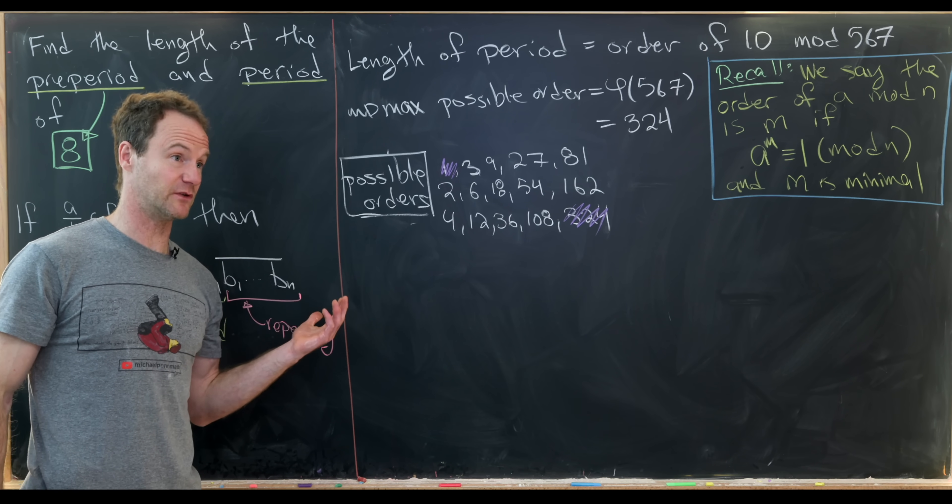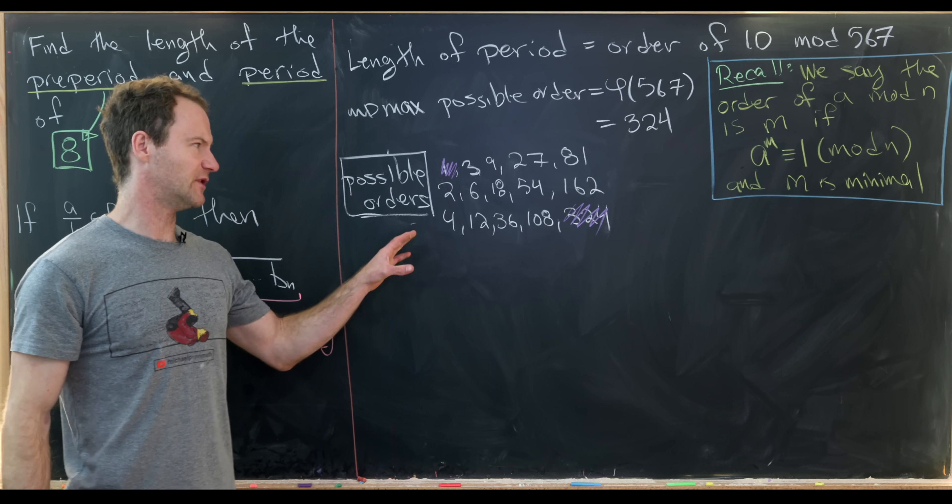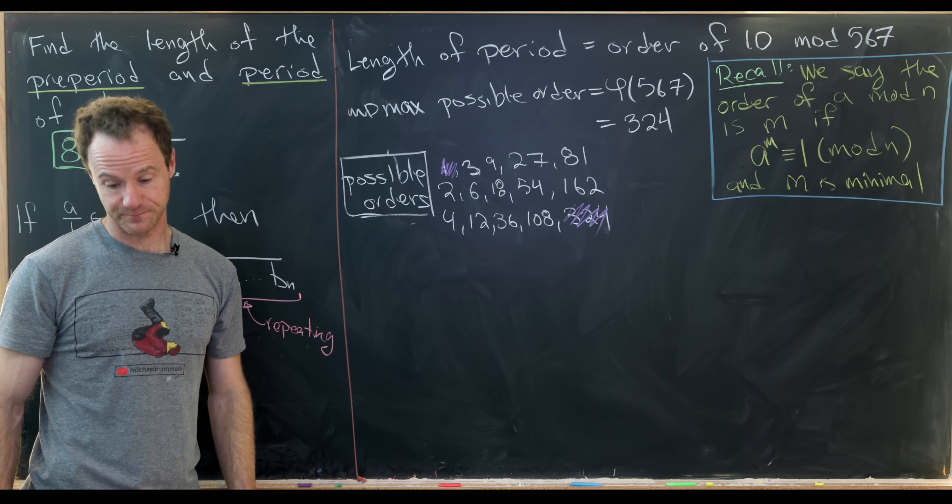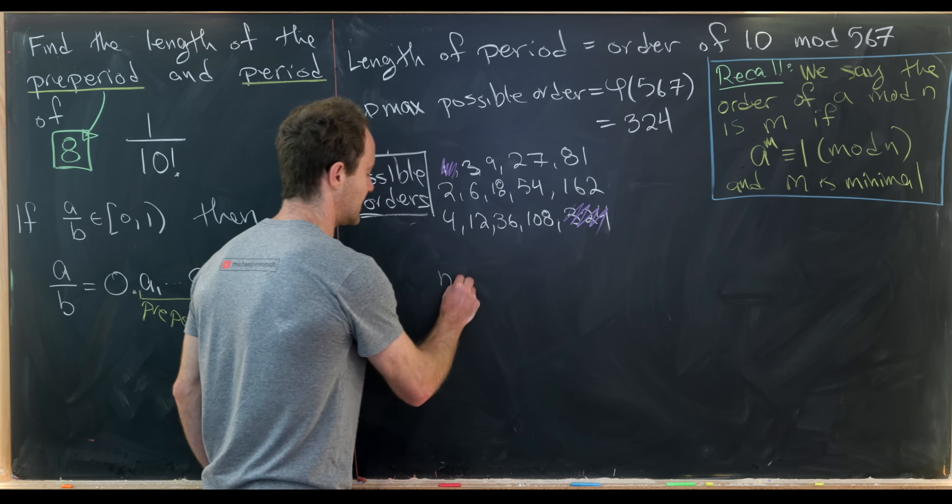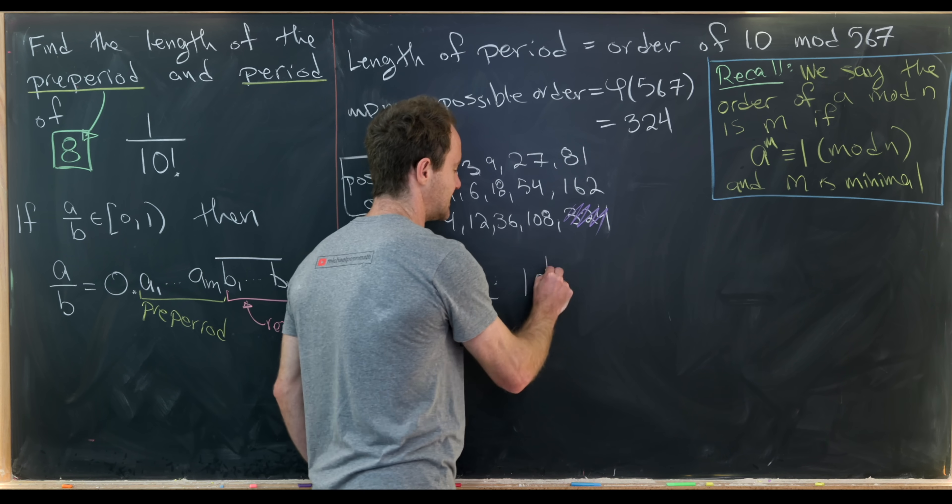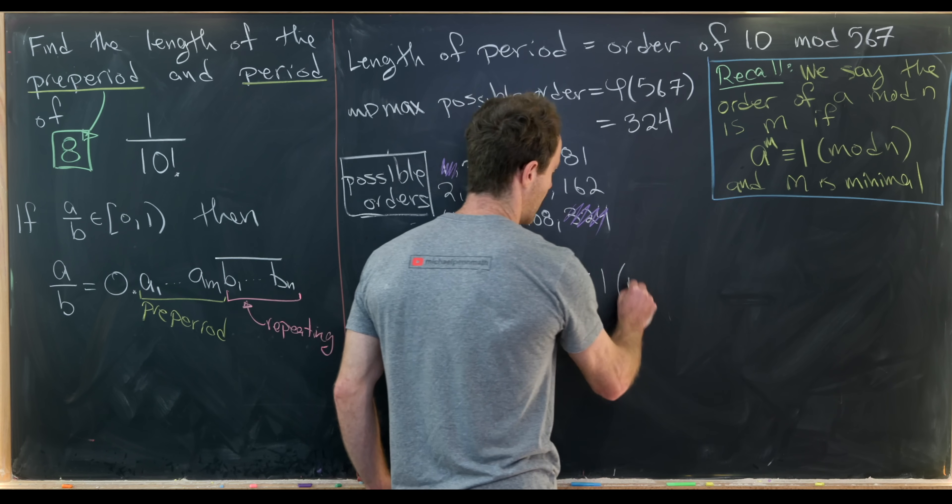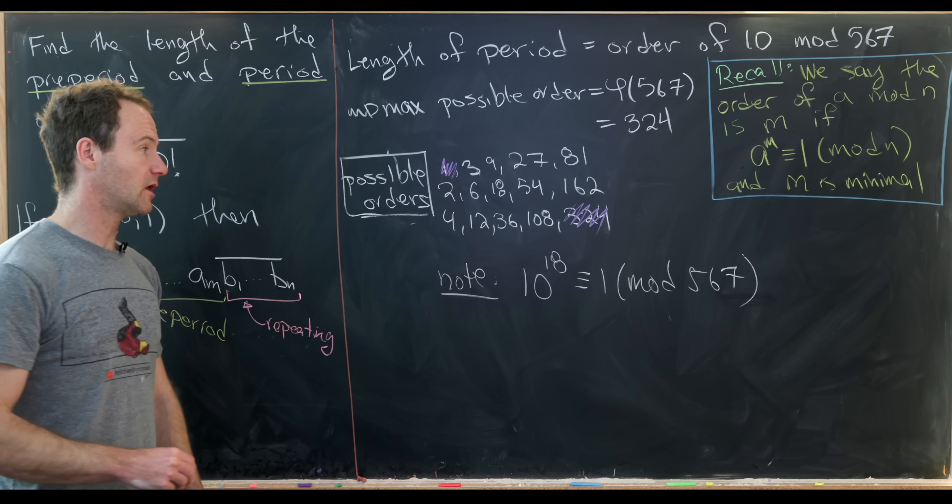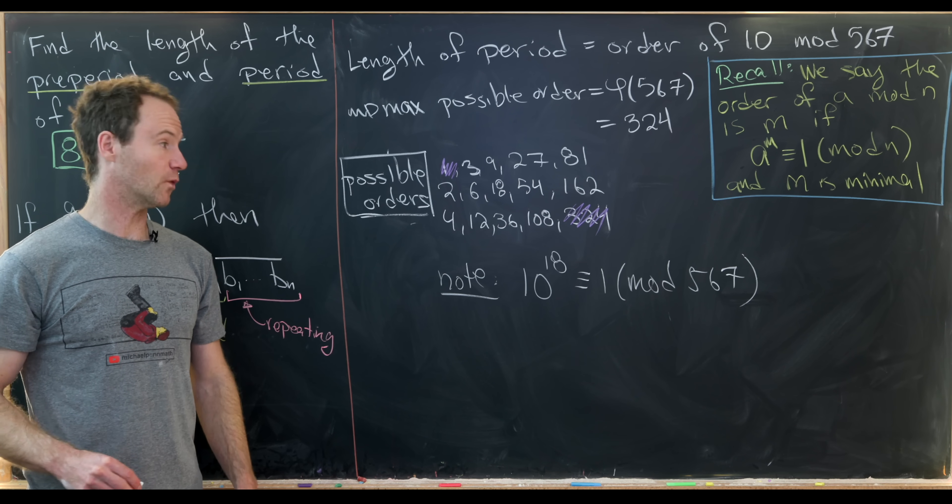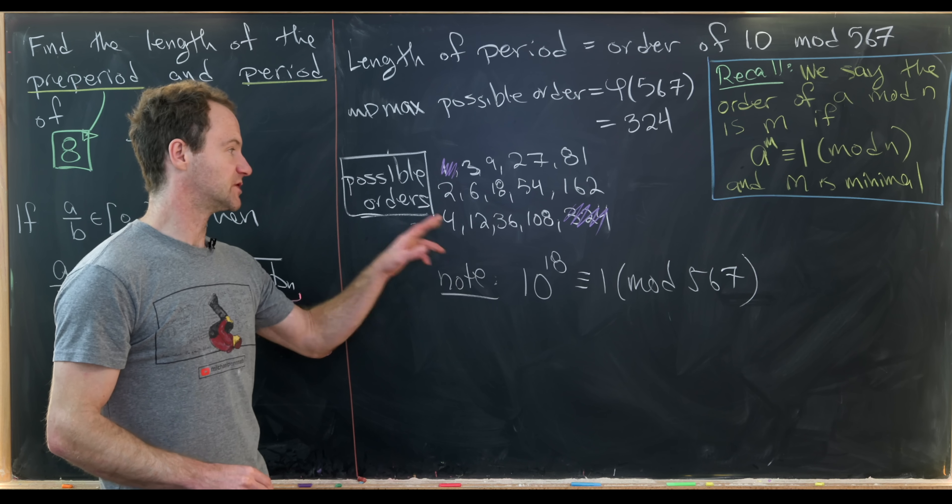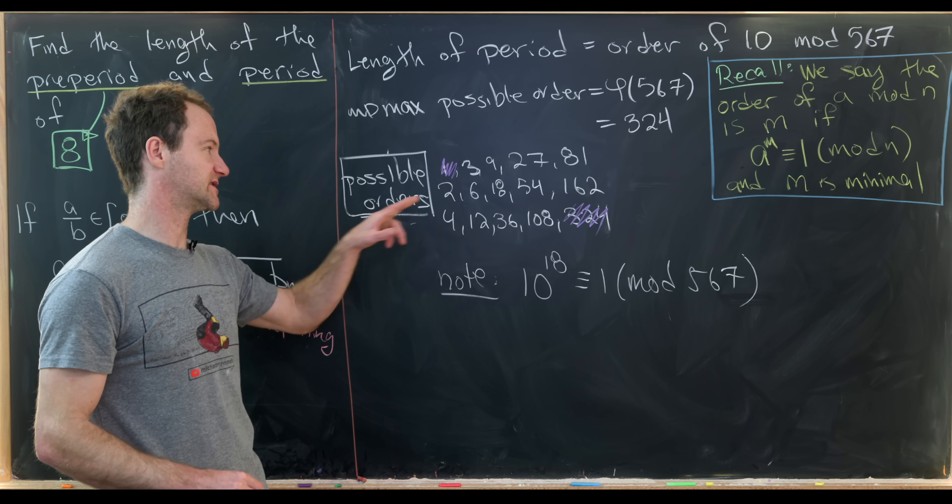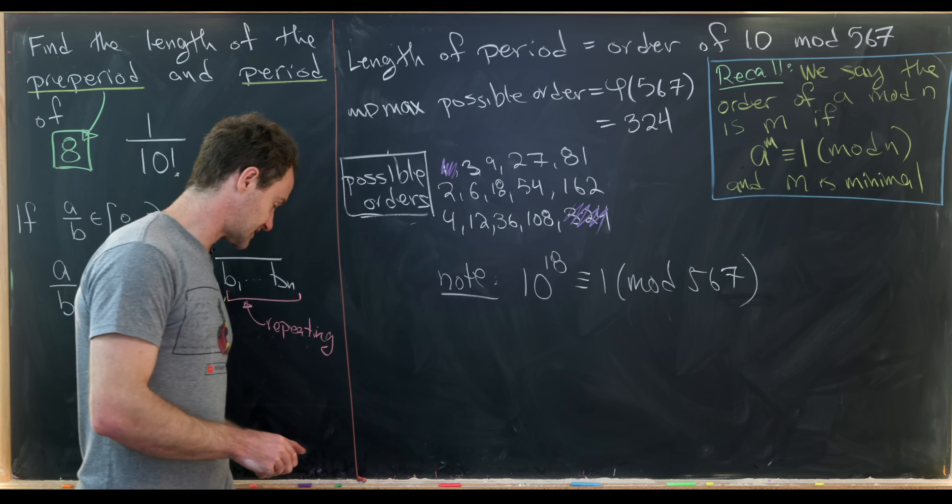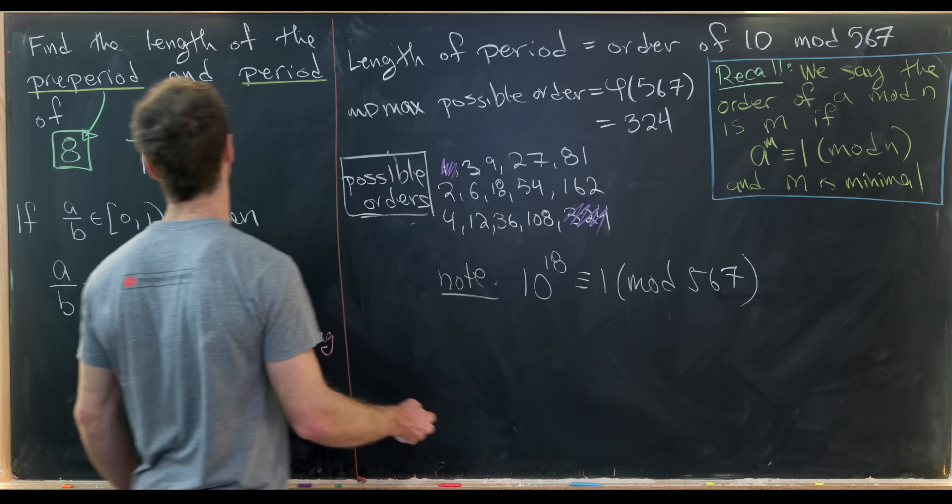So now from here you would just play the game of checking these. And to be honest, I would do it in a computer. Unless you're in a contest situation, then you'd have to maybe use the method of repeated squaring to narrow these things down a little bit more carefully. But maybe we'll just jump to the end and note that if you take 10 to the 18, you get 1 modulo 567. But anything smaller than that does not allow you to achieve 1 mod 567. So 10 to the 12 won't work, 10 to the 4, 10 to the 6, 10 squared, 10 to the 3, so on and so forth. This number 18 is the first time that we can achieve 1 mod 567.